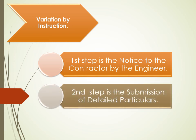The second step is the Submission of Detailed Particulars. The Contractor is to submit detailed particulars to the Engineer within 28 days, or another agreed period, of receiving the instruction. This includes: the description of the varied work performed or to be performed, including details of the resources and methods adopted by the Contractor; the program for its execution and the Contractor's proposal for any necessary modifications to the Program according to Subclause 8; and the Contractor's proposal for adjustment to the Contract Price by valuing the Variation in accordance with Clause 12 Measurement and Valuation, with supporting particulars.